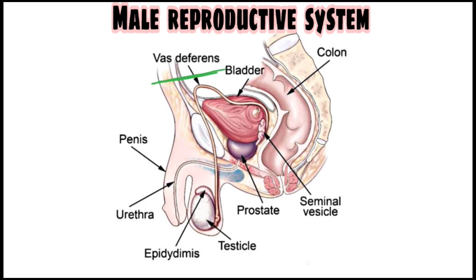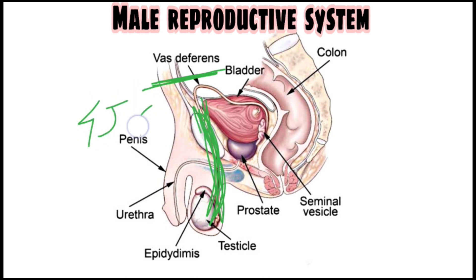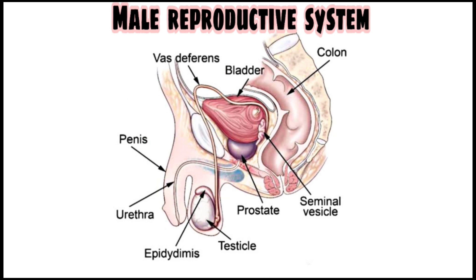The vas deferens is the connection between the internal and external reproductive systems. Its length is around 45 centimeters.